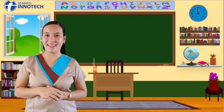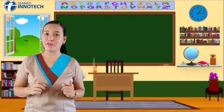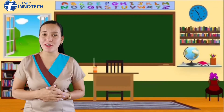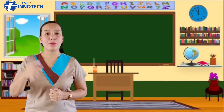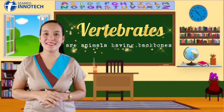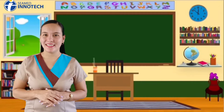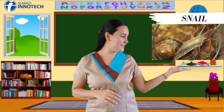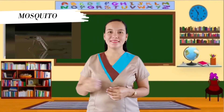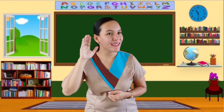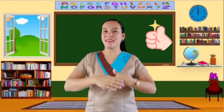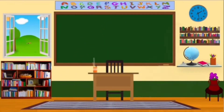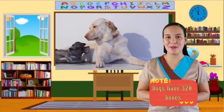Come, let's play a game. Identify which of these animals are vertebrates. Remember, vertebrates are animals having backbones. Here is our first set: Snail, Mosquito, Dogs. Correct! The answer is dog. Dogs have 320 bones.